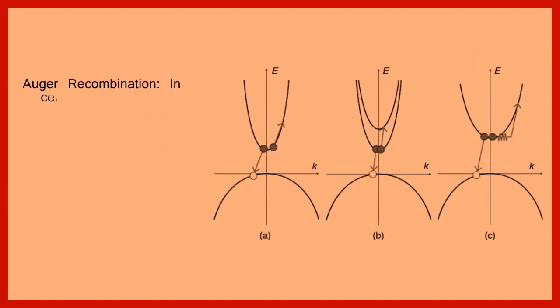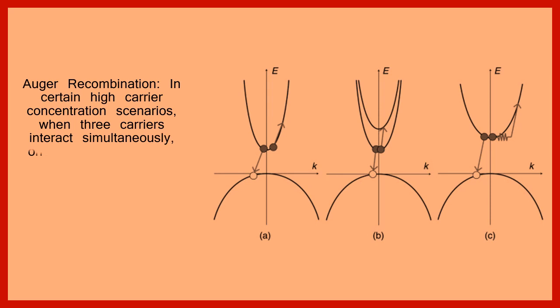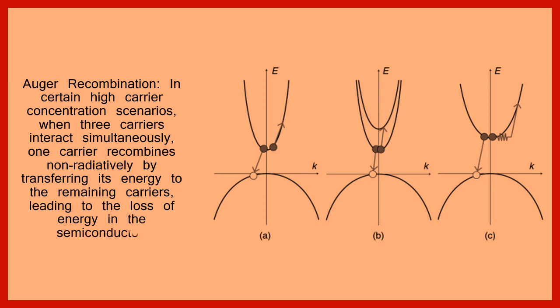Auger recombination. In certain high carrier concentration scenarios, when three carriers interact simultaneously, one carrier recombines non-radiatively by transferring its energy to the remaining carriers,